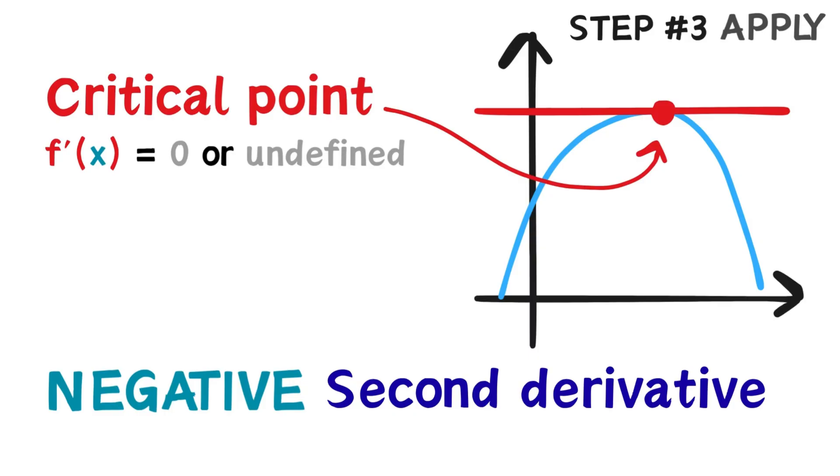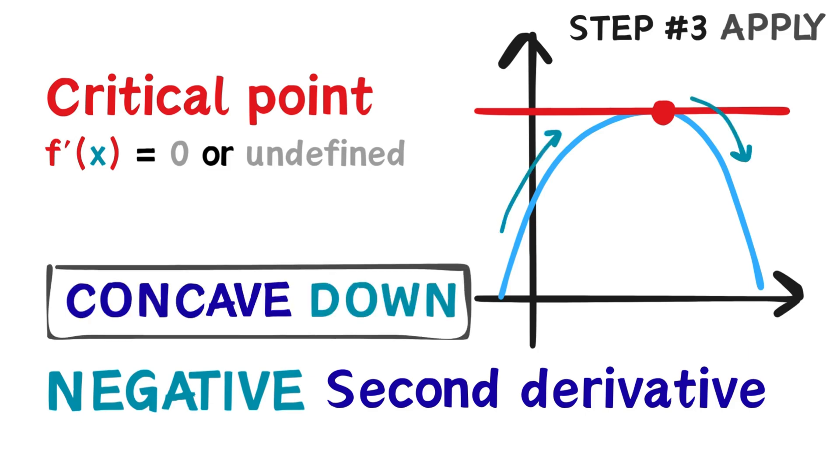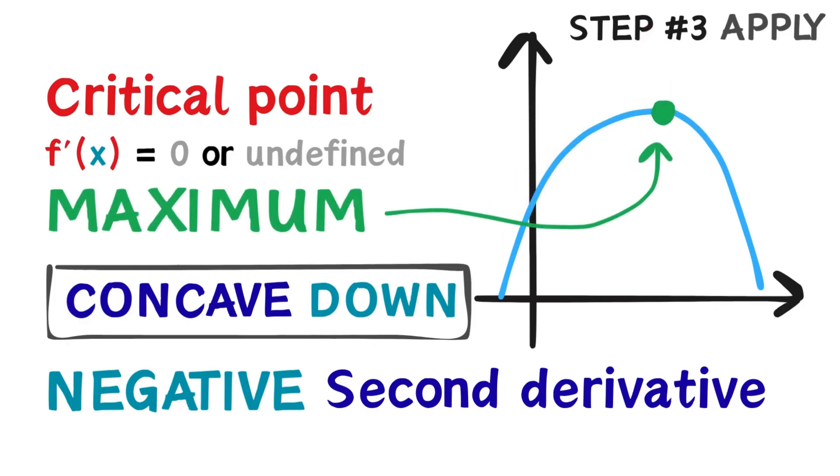On the other hand, if the second derivative is negative where the first derivative is zero or undefined, we know that the function there must be concave down. Since the rate of the function is becoming more and more negative, that means at that critical point, we hit a peak, which we call a maximum. How cool is that?